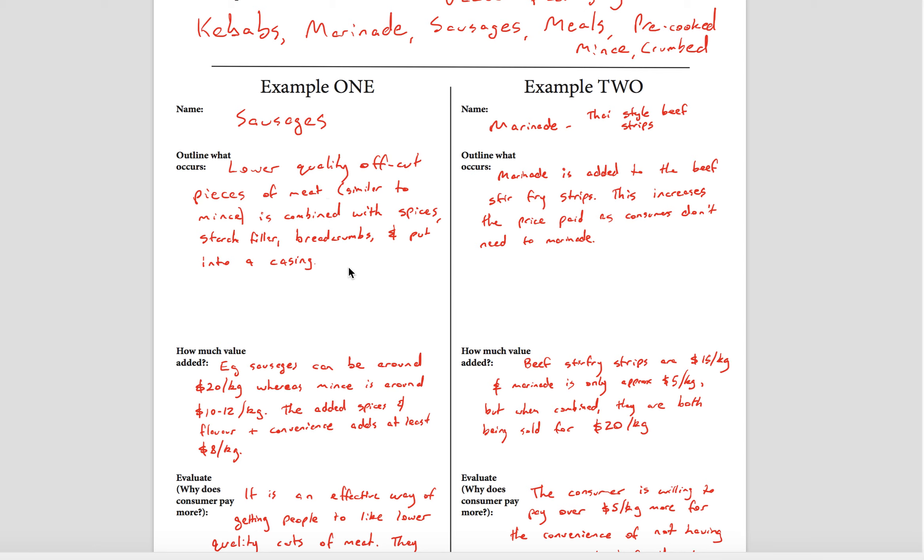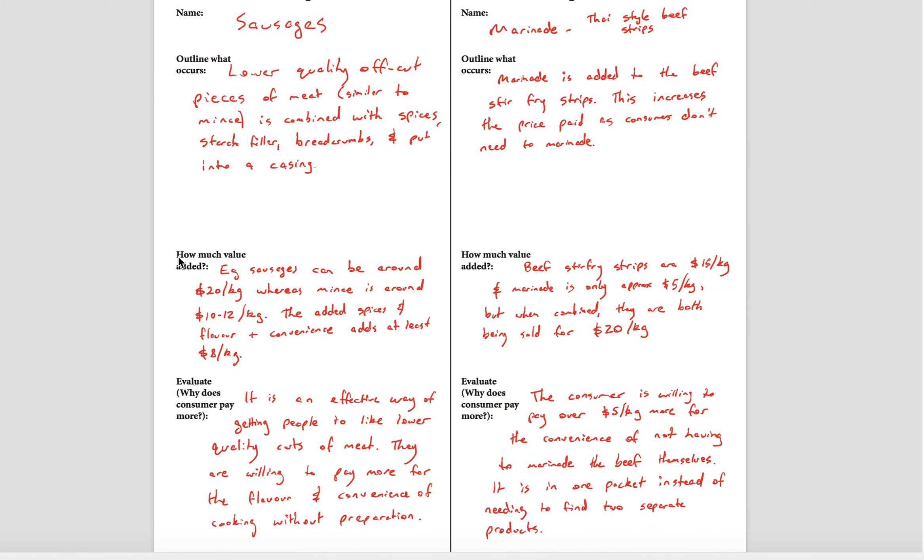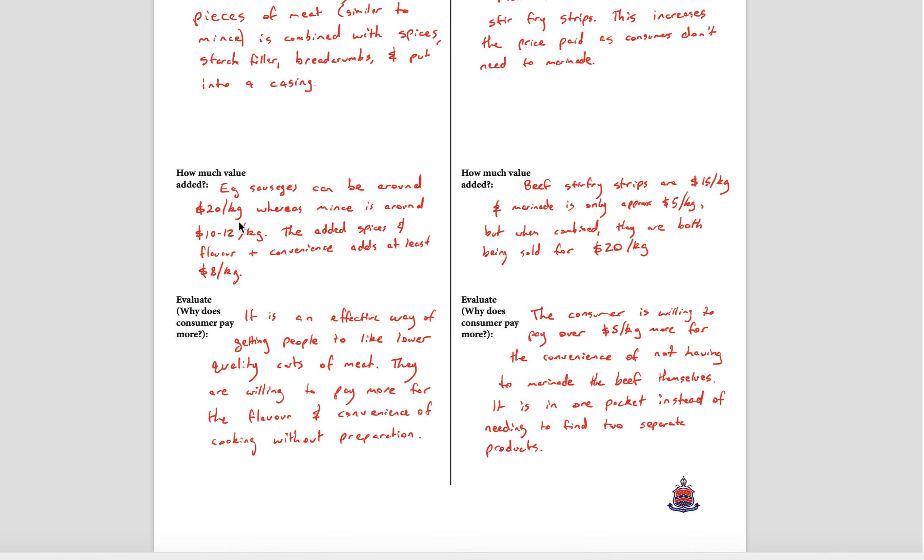Sausages are basically lower quality offcut pieces of meat similar to mince, combined with spices, starch filler, breadcrumbs, and put into a casing. Sausages can sell for around $20 a kilo, whereas mince, which is the kind of type of quality of beef that goes into the sausages, is basically $10 to $12 a kilo. They add some spices and other things and they can add at least $8 a kilo or more. It's an effective way of getting people to like lower quality cuts of meat, and they're willing to pay more for the flavor and the convenience of cooking without preparation.